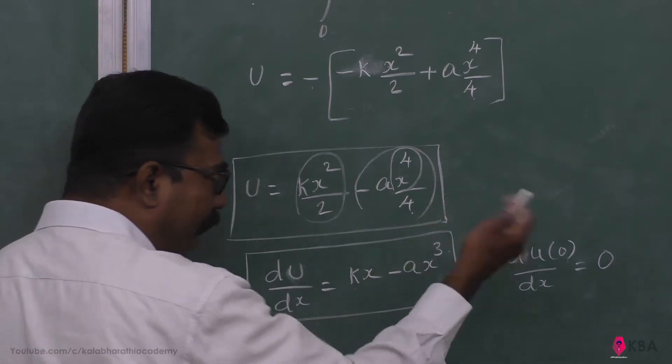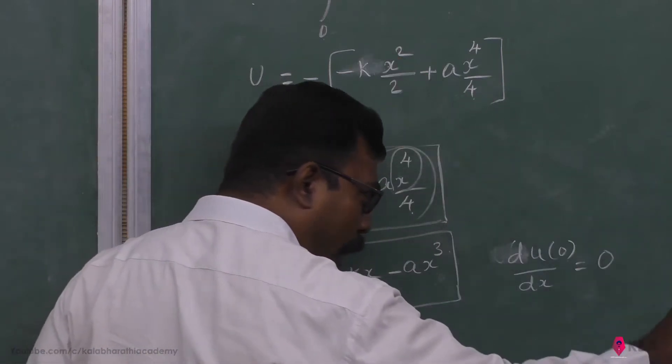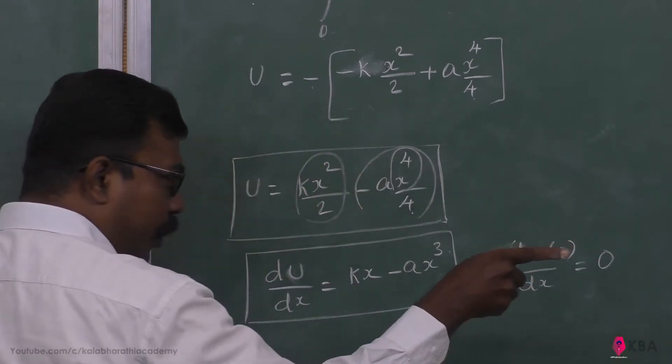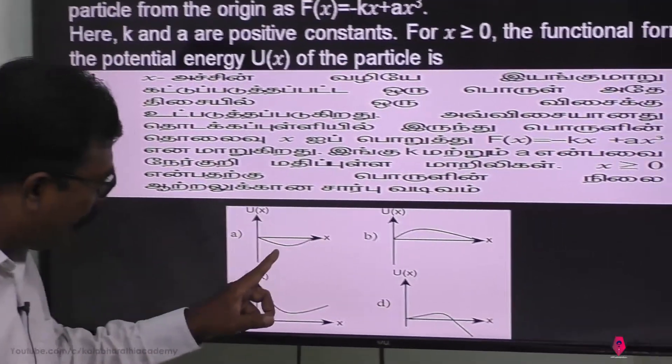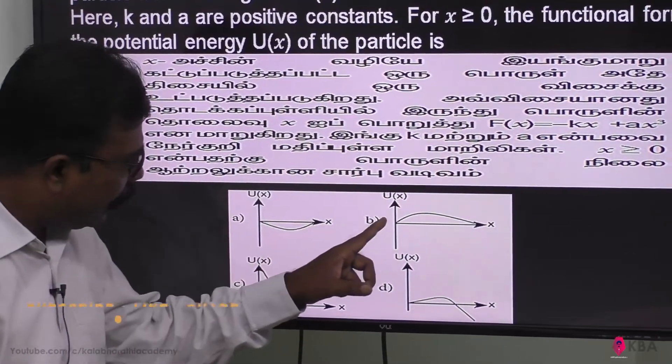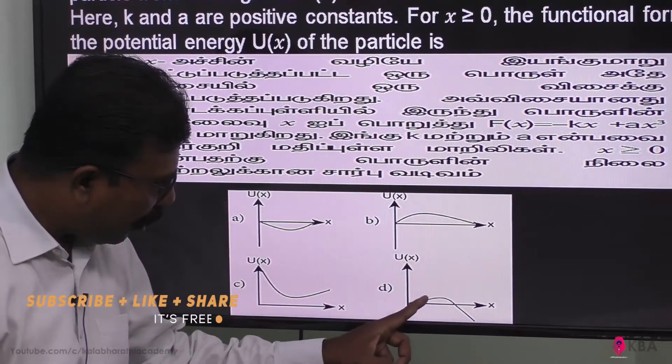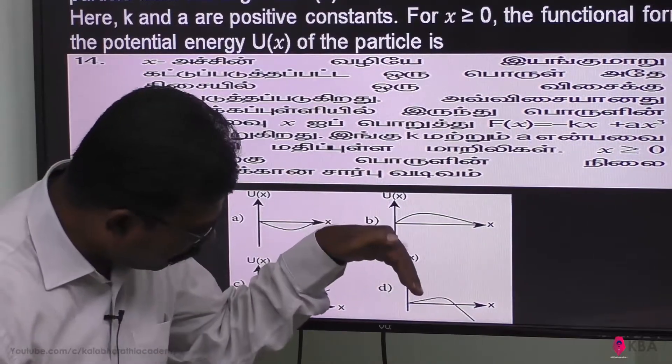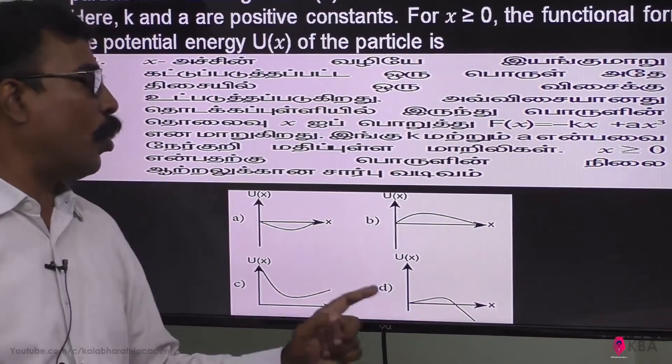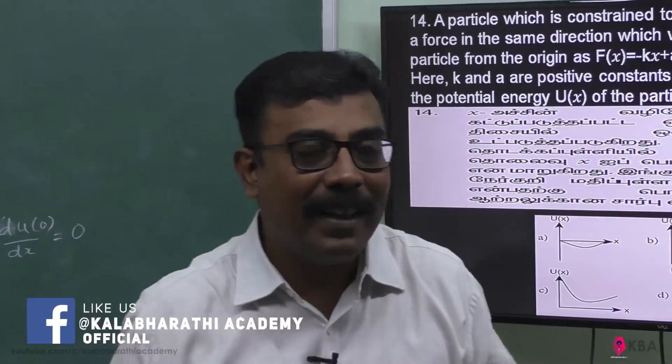For higher values of x, the function must become negative. Therefore it will be minus, and with the minus sign, this function should be dipping down. So this should be the answer.